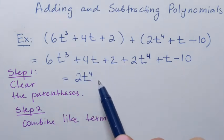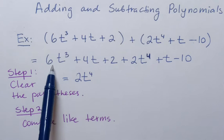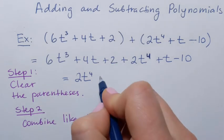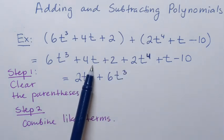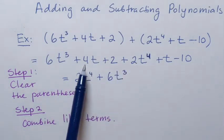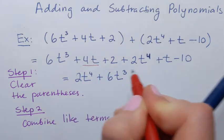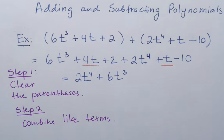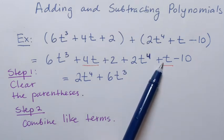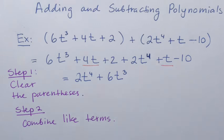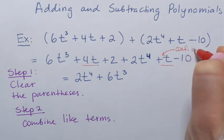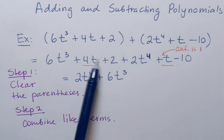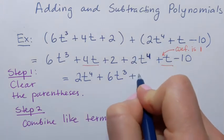What's the next power going in descending order? It's the third power, but again I don't have anything to combine it with, so I'll just rewrite it: plus 6t to the third power. Next, I have t to the power of one — so I have 4t and then just t. Remember, when no coefficient is written in front of the variable, the actual coefficient is 1. So 4t plus 1t is going to be 5t.